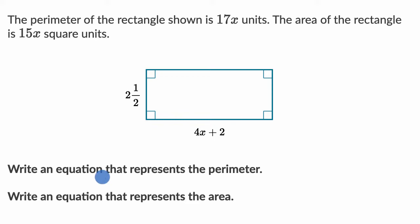All right, now let's do this together. So let's tackle this first one. Write an equation that represents the perimeter. So the perimeter is going to be the length of all of the sides. So you have this side right over here, which is 4x plus two.